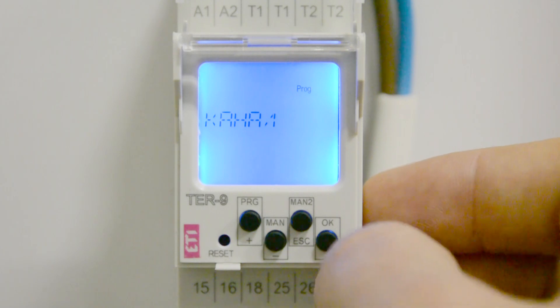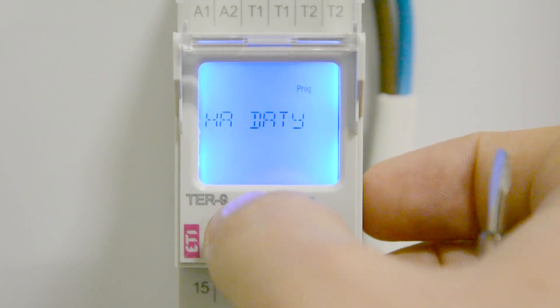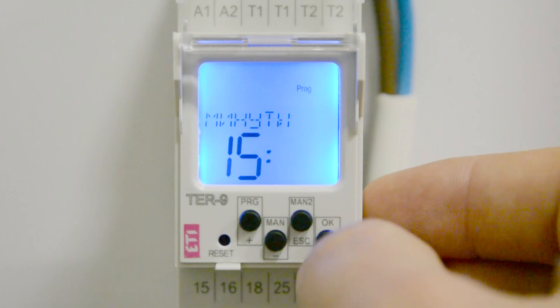Select the relay channel, then select the weekly or annual program. Set the start time of the program, and its activity by day of the week.